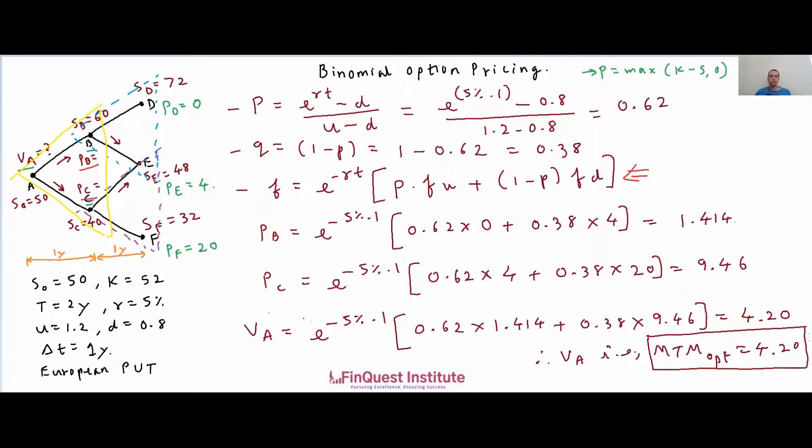Therefore VA, i.e. the MTM or mark-to-market of the option, is equal to 4.2 units. This is the fair value of the option standing today.